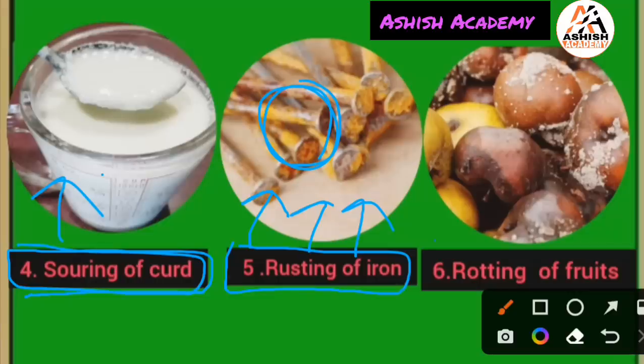Next example: rotting of fruits — phal ka sadna. Fruits are rotting. Rotting of fruits is a chemical change. To recap: souring of curd, rusting of iron, and rotting of fruits are all examples of chemical change.